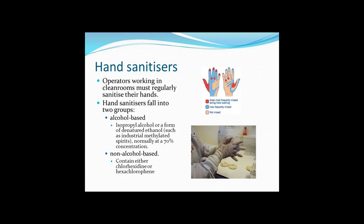Hand sanitizers are important — operators in clean rooms should regularly sanitize their hands and do so prior to each critical activity. Hand sanitizers can be divided into alcohol-based and non-alcohol-based types. The alcohol-based ones are more common, using isopropyl alcohol or denatured ethanol such as industrial methylated spirits, typically at about 70% concentration — effective between 60% and 80% because the cell takes in what it thinks is water, and the alcohol kills the cell. Non-alcohol sanitizers include chlorhexidine and hexachlorophene.